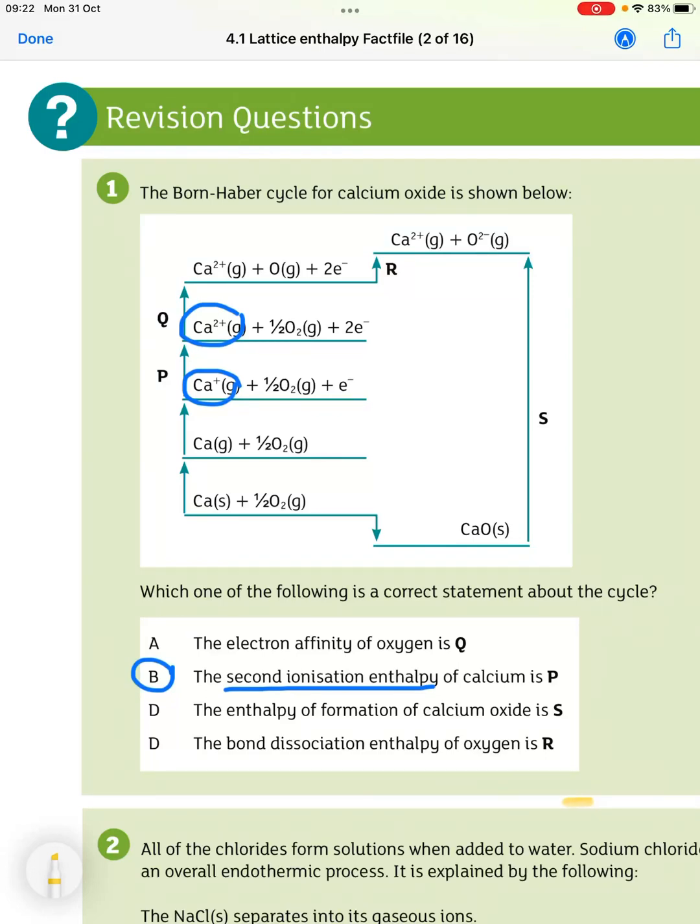Topic 4.1, lattice enthalpy, answers to the fact-file questions from SIA. So the Born-Haber cycle for calcium oxide is shown below. Which one of the following is a correct statement about this cycle? Statement A states the electron affinity of oxygen is Q. We can see here oxygen is just going from half O2 to O. That is not gaining any electrons.